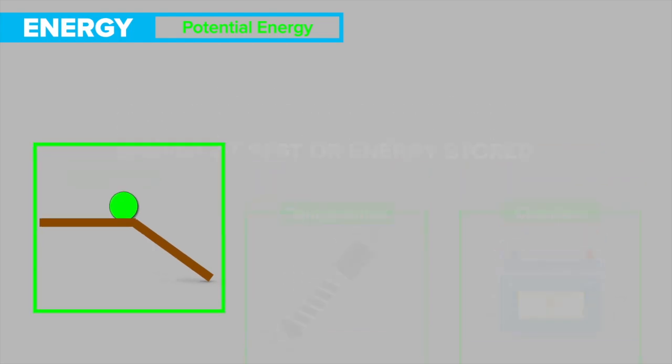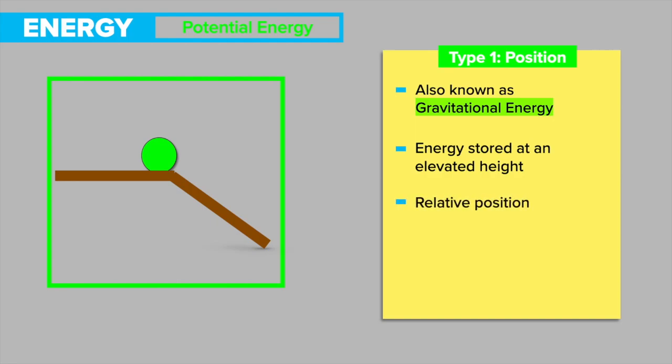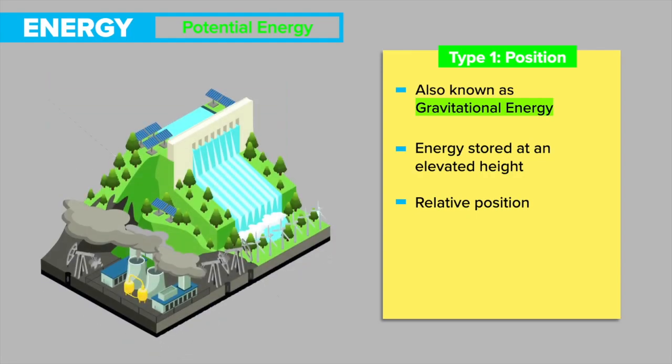Type one: position. Position potential energy, also known as gravitational energy, is energy stored at an elevated height, which means an object can store energy as the result of its relative position. For example, the ball at the top of this plank has the potential of rolling down the plank if it was disturbed by an outside force. Also, water stored into an elevated hydro dam reservoir is another example of this type of potential energy.